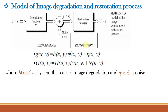The model has a degradation portion and a restoration portion. If H is a linear position-invariant process, the degraded image in the spatial domain is given by: g(x,y) = h(x,y) * f(x,y) + eta(x,y), where h(x,y) is the spatial representation of the degradation function and * denotes convolution. Converting to the frequency domain — since convolution becomes multiplication — gives: G(u,v) = H(u,v) · F(u,v) + N(u,v), where capital letters denote Fourier transforms.